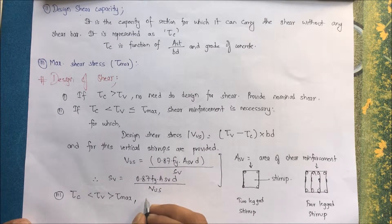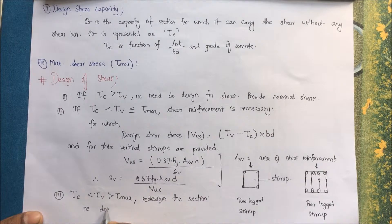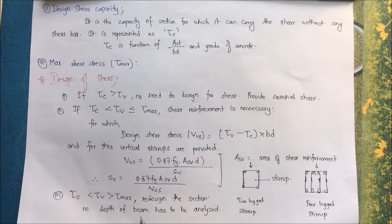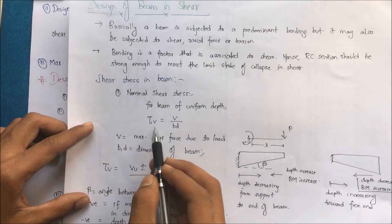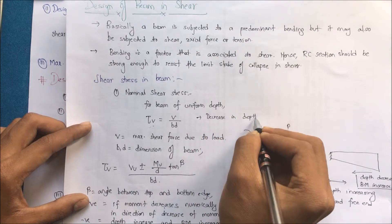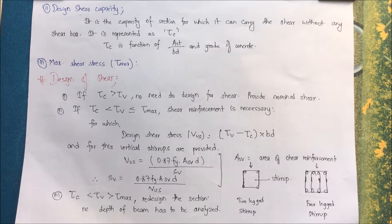Case 3: if τc is less than τv and τv is greater than τmax, the nominal shear strength exceeds the permissible value, so the section must be redesigned — meaning the depth of the beam has to be altered. Since τv is inversely a function of b and d, increasing the depth or width of the beam decreases the shear stress.